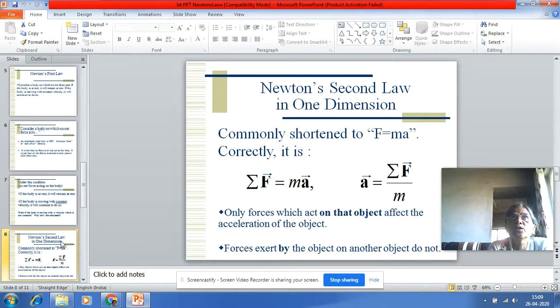Now we move towards Newton's second law of motion in one dimension. It is mathematically given as F equals MA, where F is a vector quantity, that is force. M is the mass of the body and A is the acceleration, which is again a vector quantity.